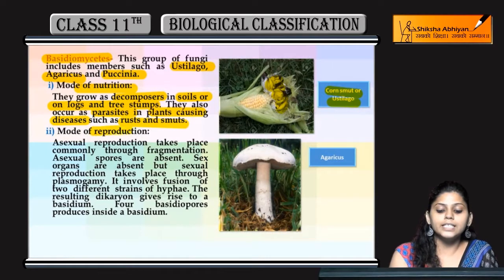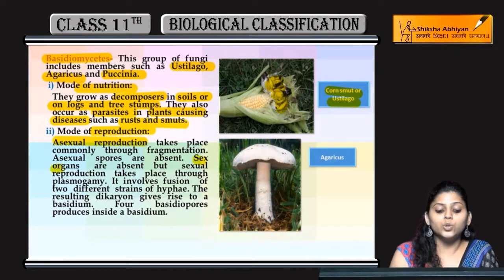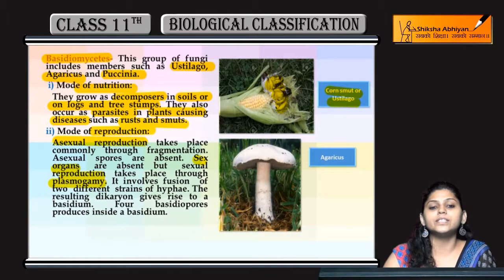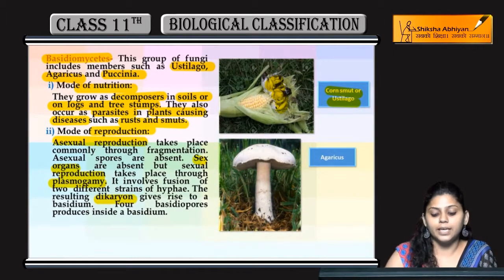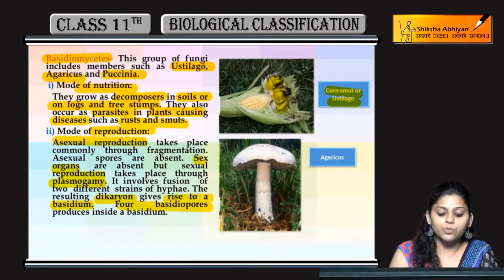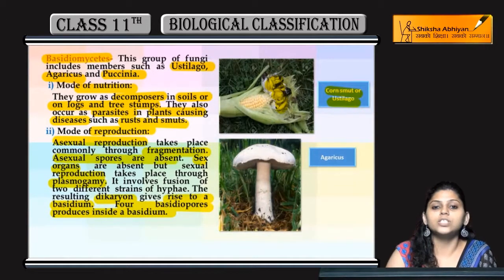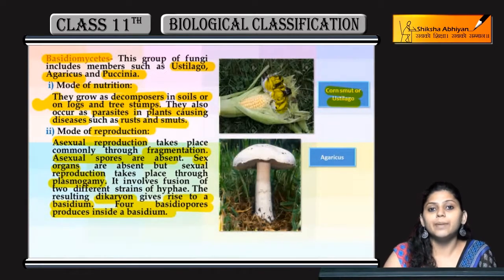Basidiomycetes mein reproduction asexually aur sexually dono hoti hai, though in mein sex organs absent hote hain. Reproduction hoti hai by plasmogamy — plasmogamy mein sirf cytoplasm fuse karta hai, nuclei fuse nahi karta — jis ki wajah se dikaryon banta hai jo give rise karta hai basidium. Four basidiospores produce hote hain inside one basidium. Asexual reproduction hoti hai by fragmentation kyunki in mein asexual spores absent hote hain.